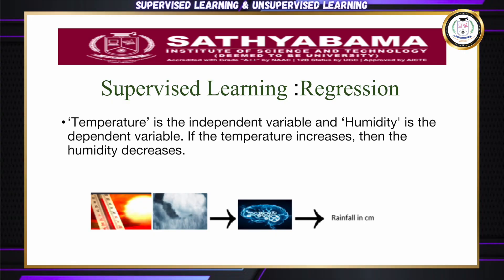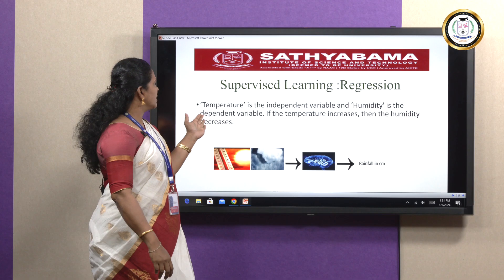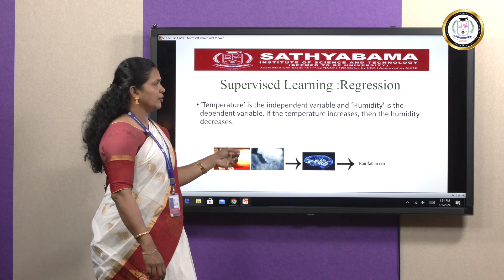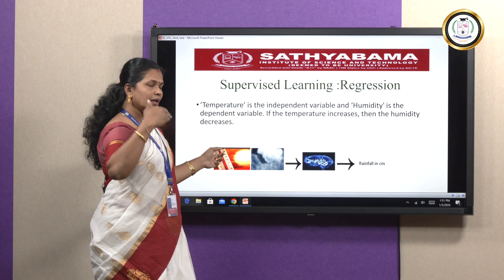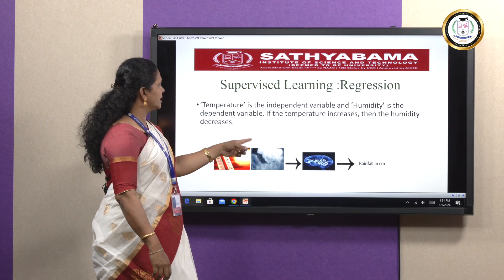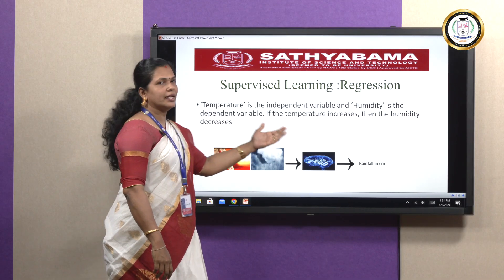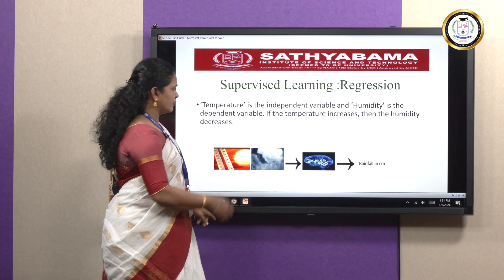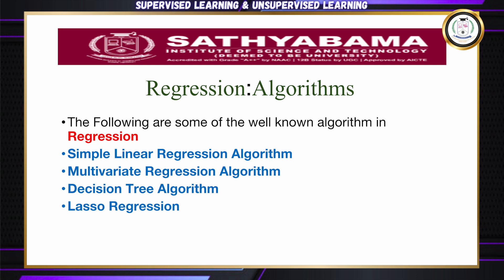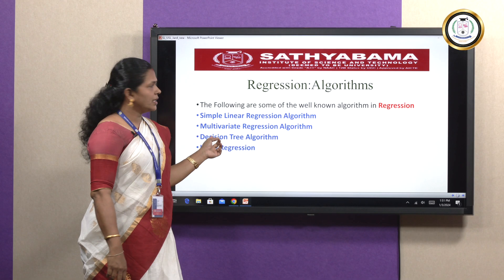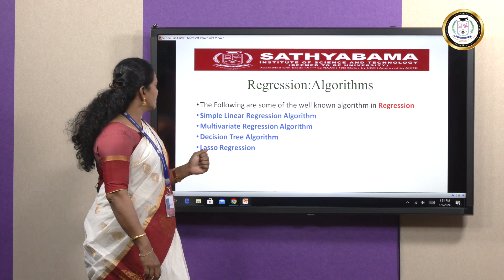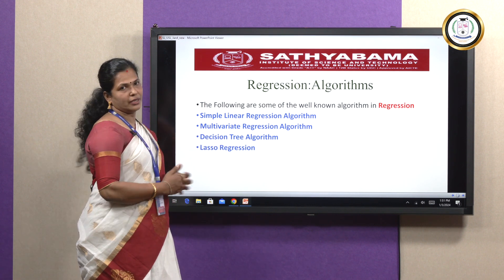Example: temperature is the independent variable and humidity is the dependent variable. If temperature increases, humidity decreases. We feed these two variables into the model, which learns the relationship between them and gives the output — for example, rainfall in centimeters. Popular regression algorithms include: simple linear regression, multivariate regression, decision tree, and Lasso regression.